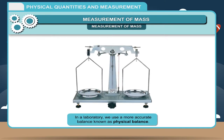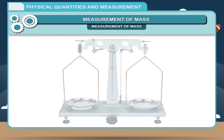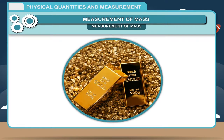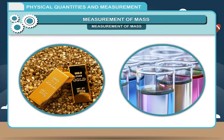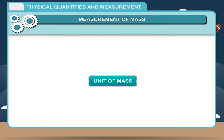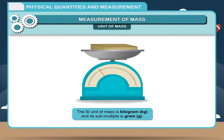In a laboratory, we use a more accurate balance known as a physical balance. It is also used to measure the mass of gold, chemicals required for making medicines, etc., and is highly accurate in measurement. The SI unit of mass is kilogram (kg) and its sub-multiple is gram (g).